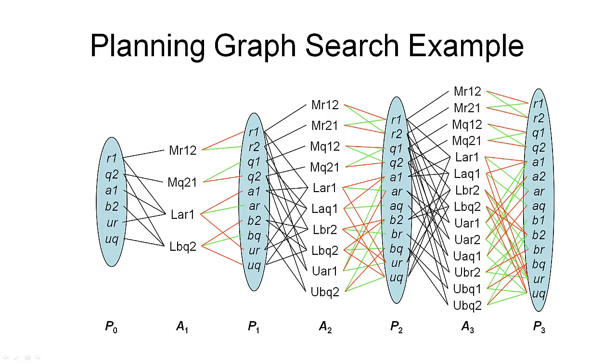And here is an example of how this works in the planning graph we've seen before. We start with our original goal consisting of two goal propositions in the last proposition layer, which is P3 in this graph. And this layer does indeed contain the two goal propositions, and they are not mutex here.